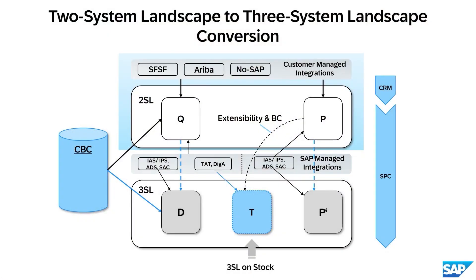The 2-System landscape consists of the quality and production environments. A large part of our installed base is currently running their 2-System landscape with a Solution Builder tool that manages the reference content and activates the customer configuration change. Other installed base are already using the CPC solution that takes over the role of Solution Builder with additional capabilities. A newly provisioned system — the Test or T-System — will be introduced to take over the quality assurance task from the erstwhile queue system, with the production tenant remaining as before. The customer will also be able to implement new projects without disruption from upgrades.